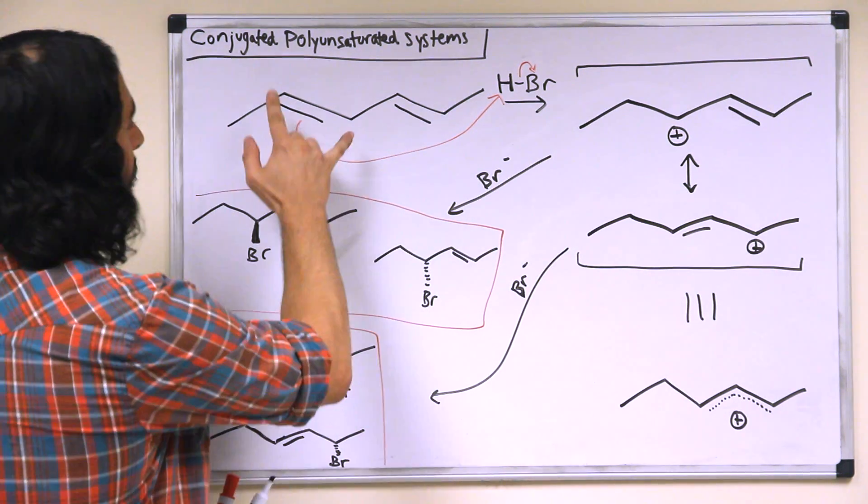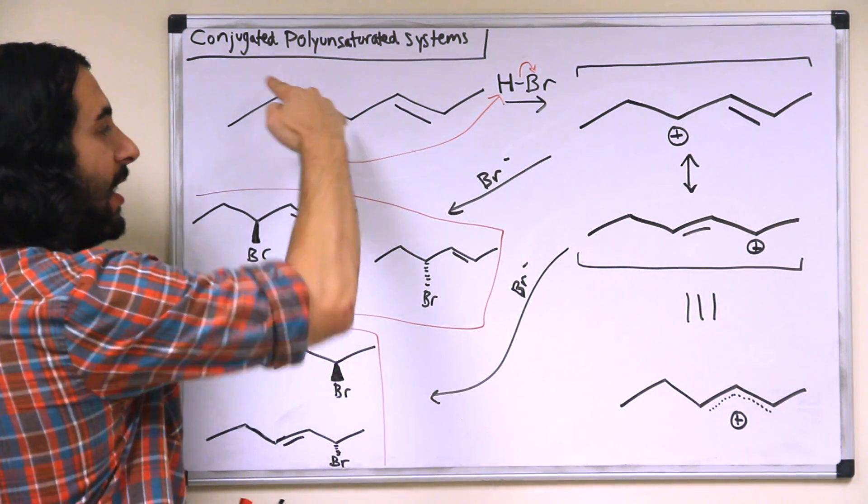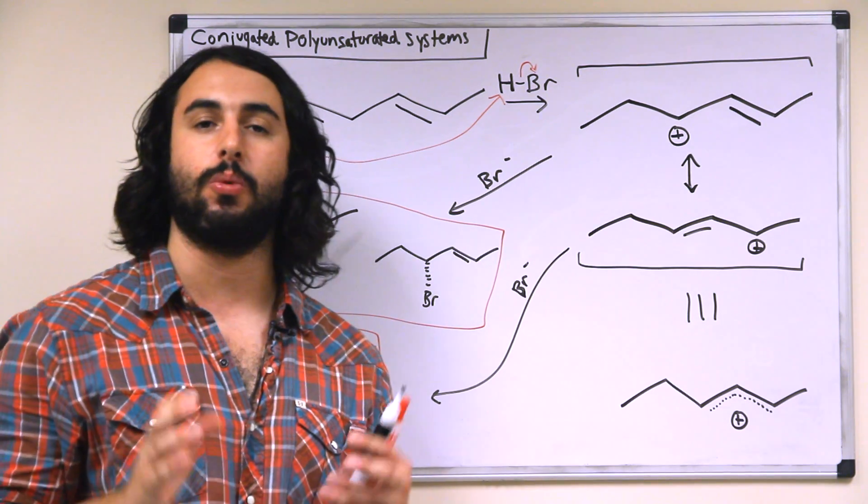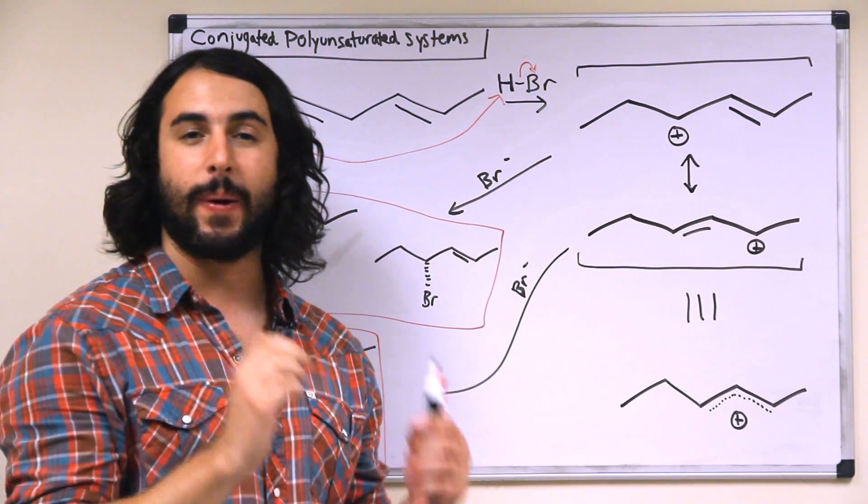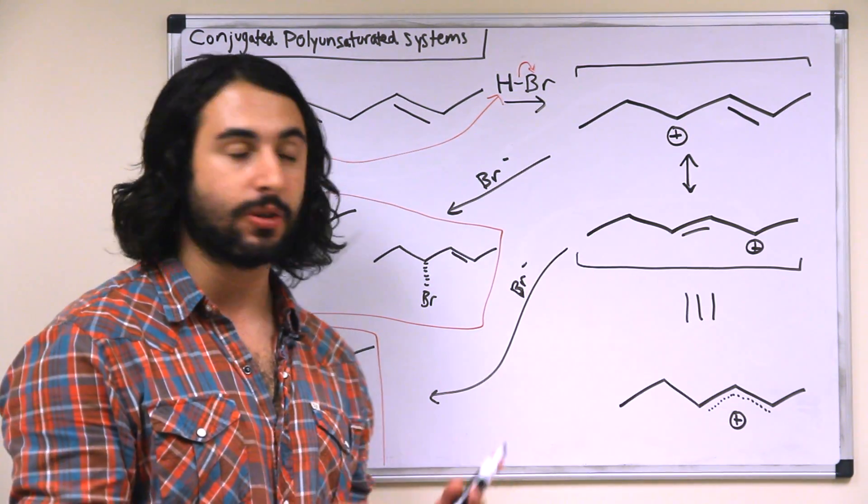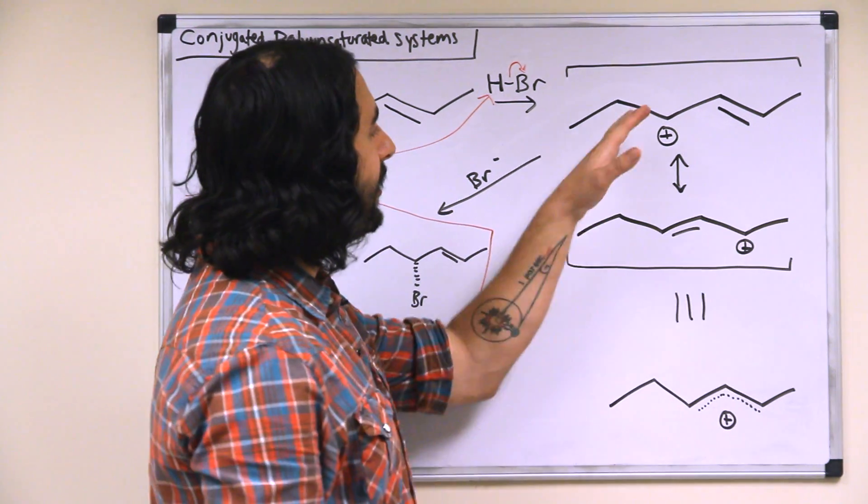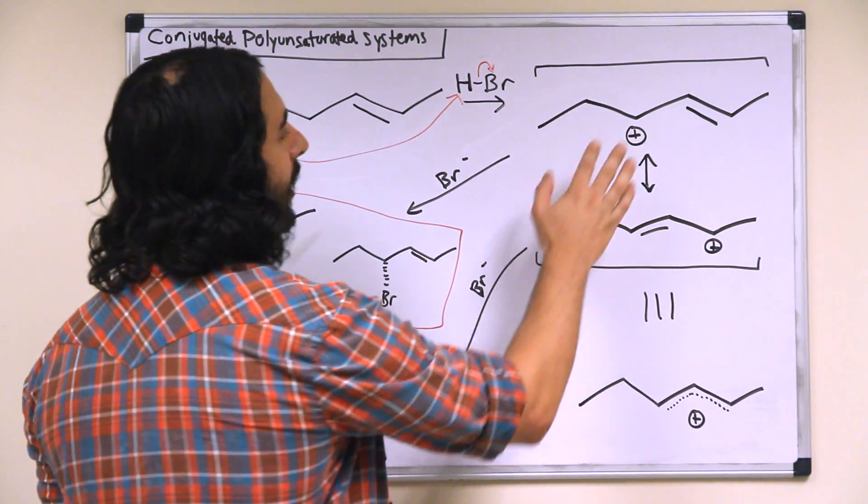Now because these are both secondary carbons, we would expect no preference or no regiospecificity in where that carbocation ends up on the intermediate. But if we take a look at the intermediate, we have to realize something here.